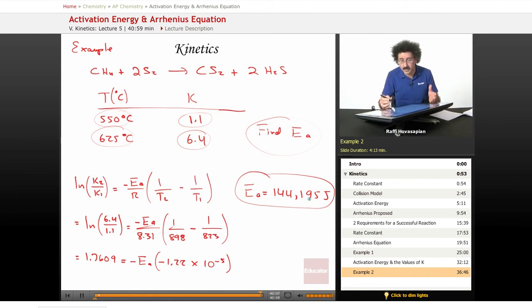We've used the Arrhenius equation, which again says that the rate constant is equal to some constant called the frequency factor, exponential minus activation energy over RT.